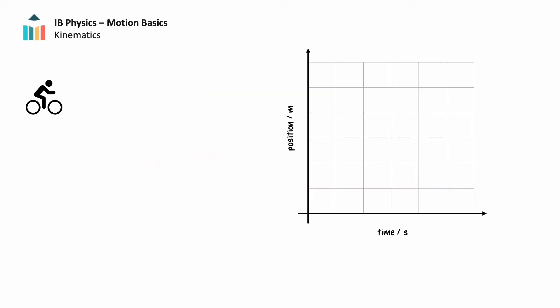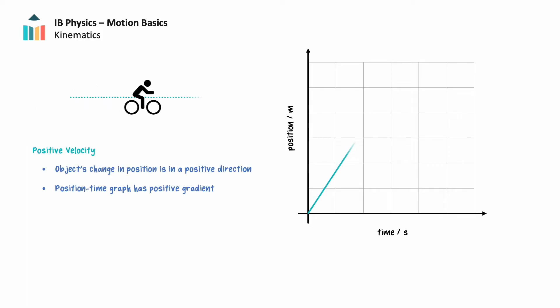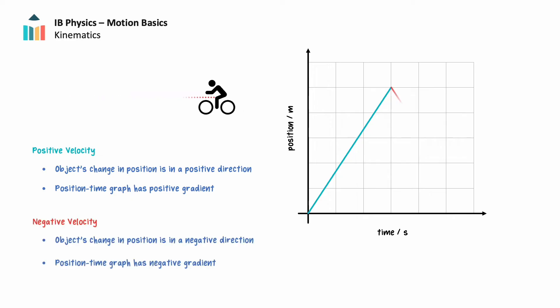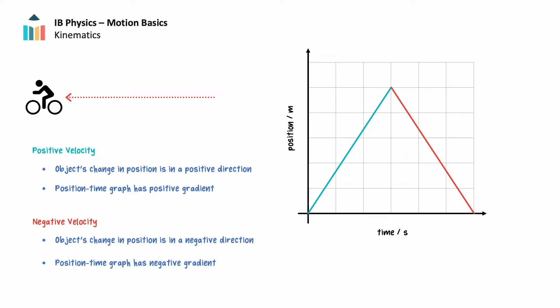An object has positive velocity when its position changes in a positive direction. Traditionally, positive directions include north, east, up, right, and forward, but these can be defined in opposite directions — it's up to us. On a position-time graph, positive velocity is indicated by a positive gradient. An object has negative velocity when its position changes in a negative direction. Traditionally, negative directions include south, west, down, left, and backward. Once again, we can choose which directions to define as positive and negative. On a position-time graph, a negative velocity is indicated by a negative gradient.